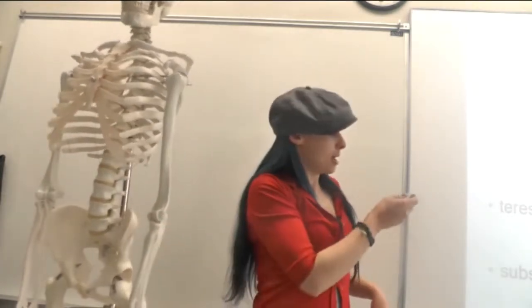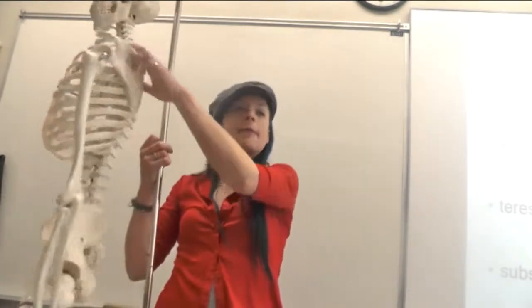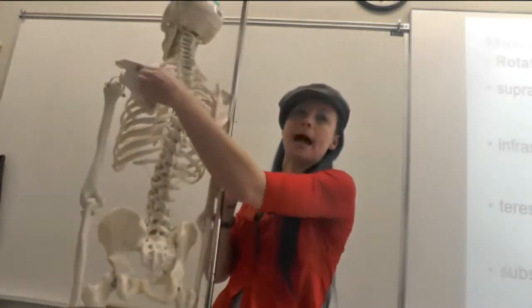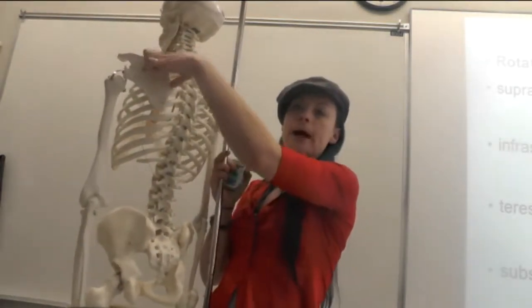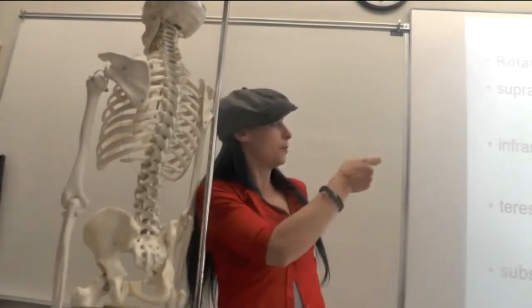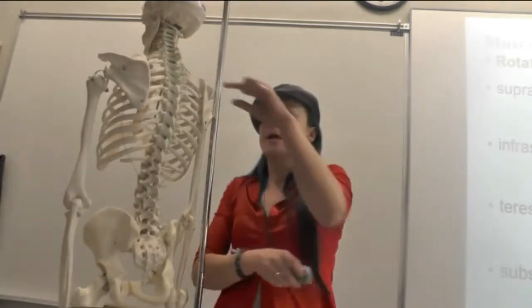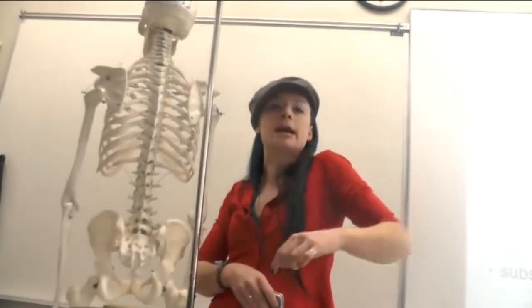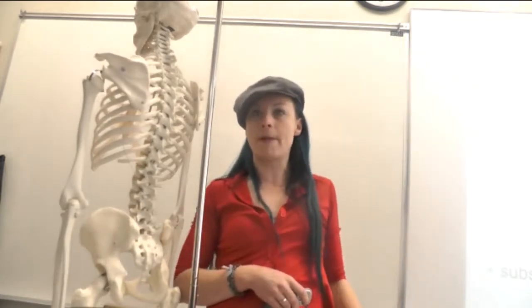So we already talked about the scapula and its markings. We said this was the spine of the scapula back here. This is the supraspinous fossa, so the supraspinatus muscle is the muscle that resides in it, and that muscle is the one that initiates arm abduction. So it's a synergist with deltoid for arm abduction.